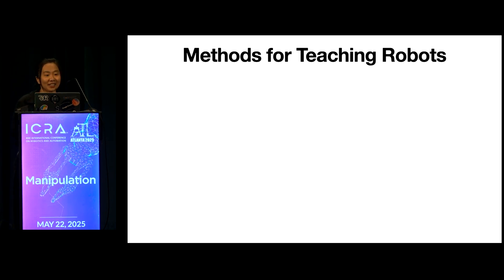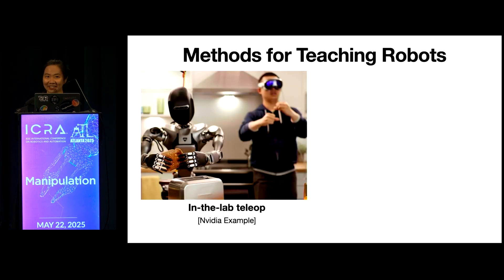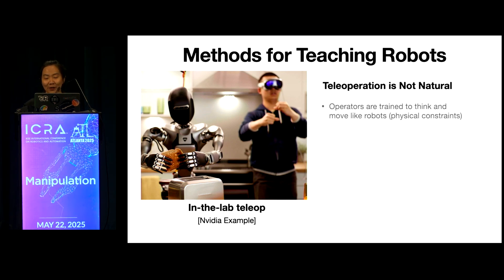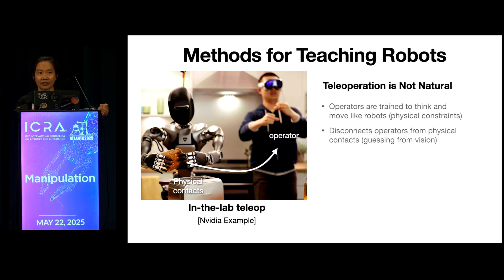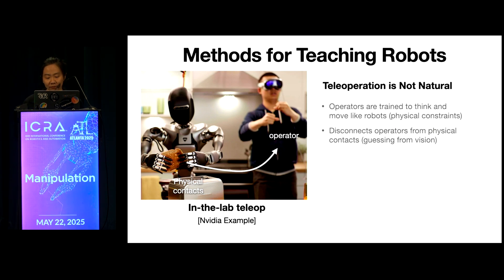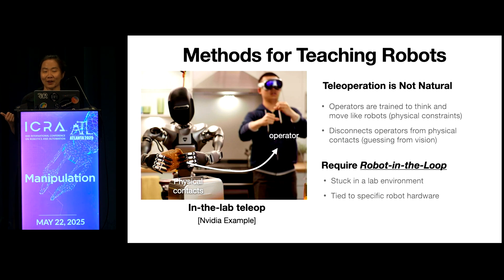Today's go-to method to teach robots new skills is probably robot teleoperation — this example is from NVIDIA, and many companies are doing something similar. But teleoperation is really not natural at all: it forces the operator to think and move like a robot to satisfy physical constraints, and the teleoperation device often disconnects the operator from the rich physical contacts and feedback happening during manipulation. Therefore, the operator needs to guess where and when contact happens from vision alone.